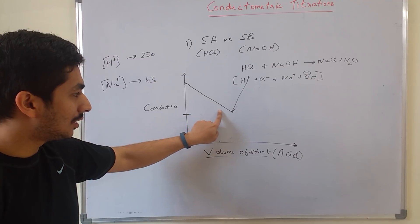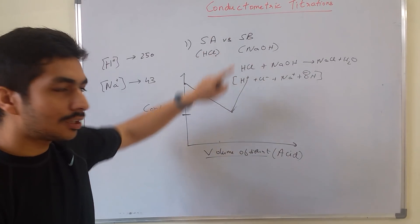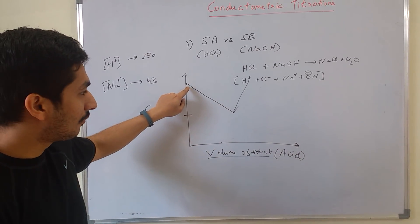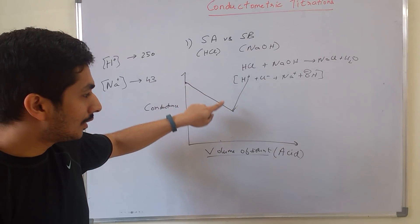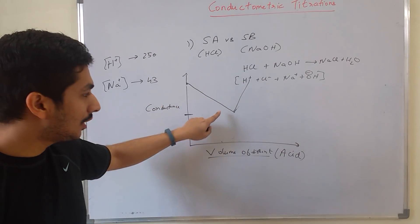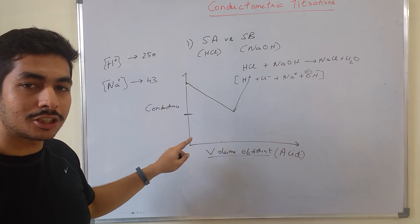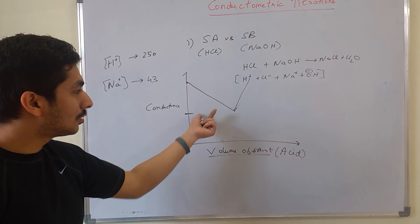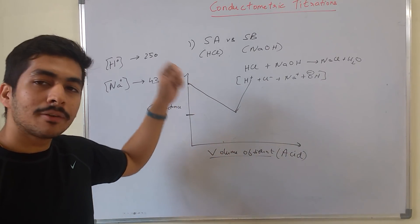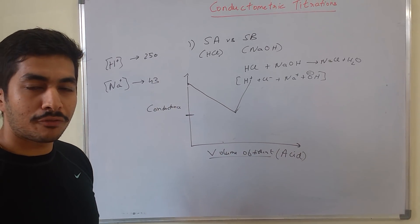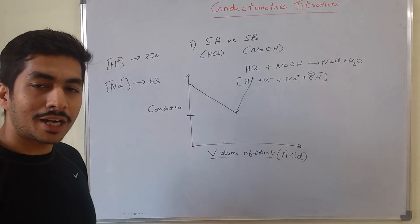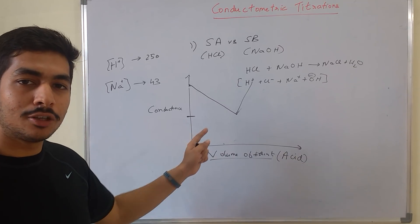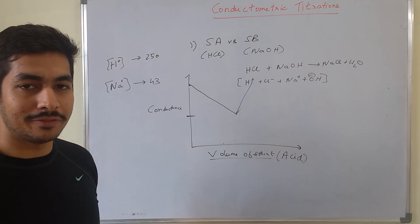When acid is added from the burette, the initial slope is less steep and the post-equivalence increase in conductance is very sharp, because H⁺ ions from the added acid are highly mobile. So the graph is inverted compared to when you add base from the burette. If adding base from the burette, the steep fall comes first; if adding acid from the burette, the sharp rise comes after the equivalence point. This is a very important conceptual distinction.